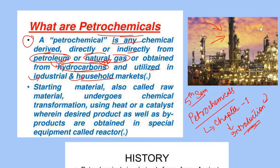The starting material is a petrochemical. The starting material is a raw material, also called feedstock. It undergoes chemical transformation — this is a raw material. It involves a chemical transformation, a chemical change — transformation means all is changed.